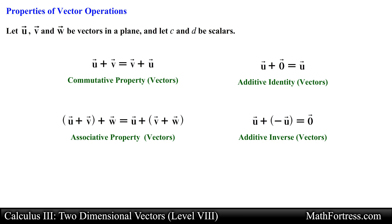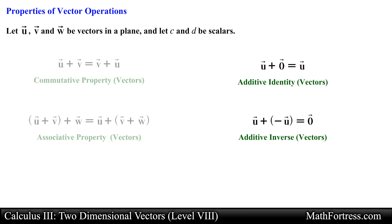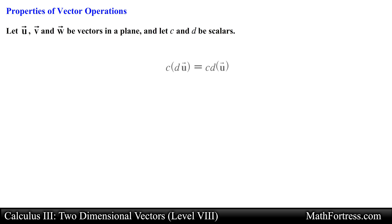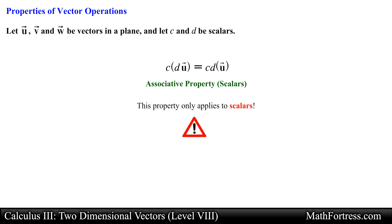Now let's take a look at vector properties that involve both scalars and vectors. Scalar c times scalar d times vector u is equivalent to the product of scalar c and d times vector u. Notice that the scalars are following the associative property of multiplication. In a later video we will learn about vector multiplication. For now keep in mind that this property only applies to scalars.